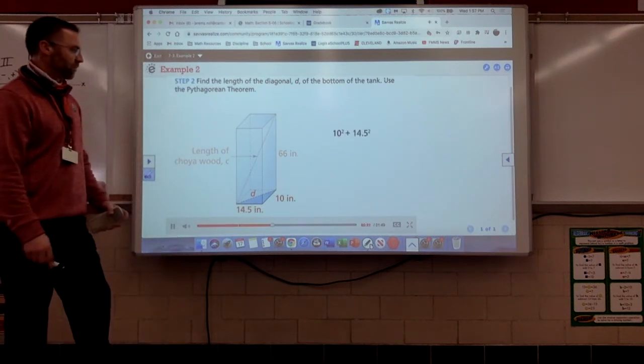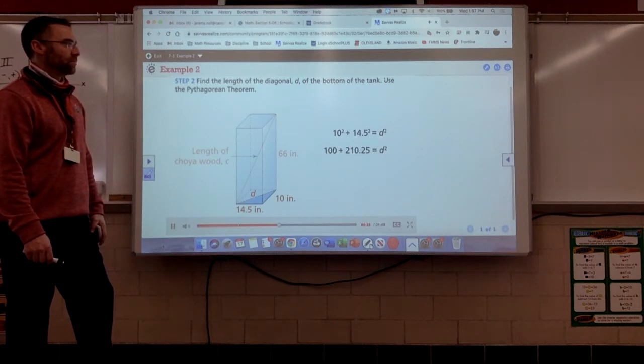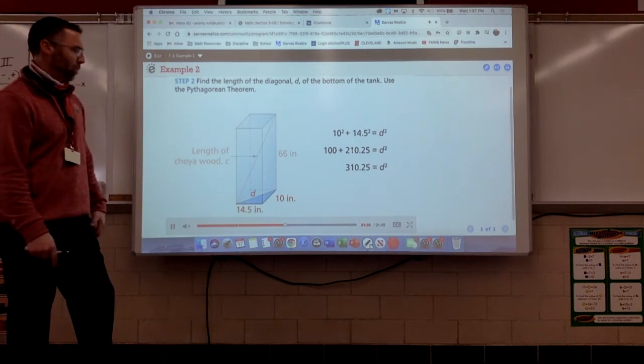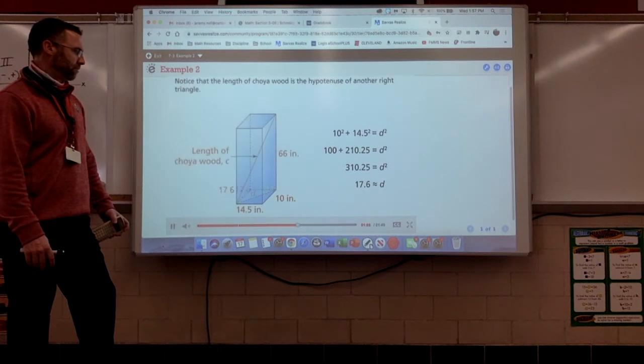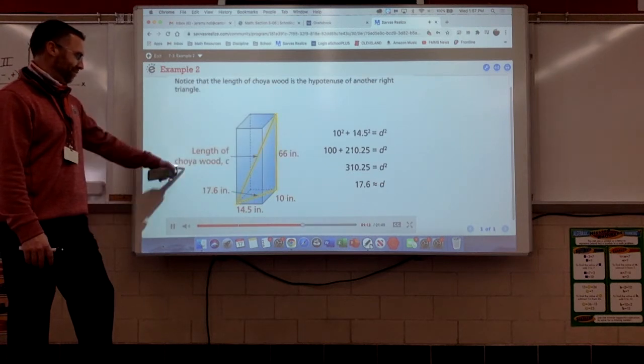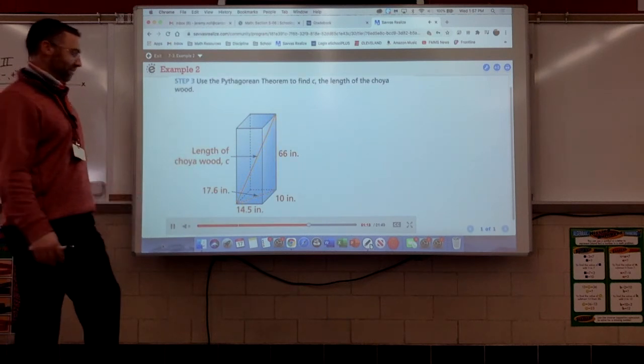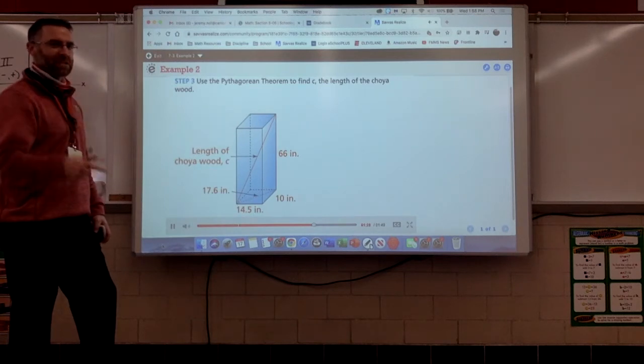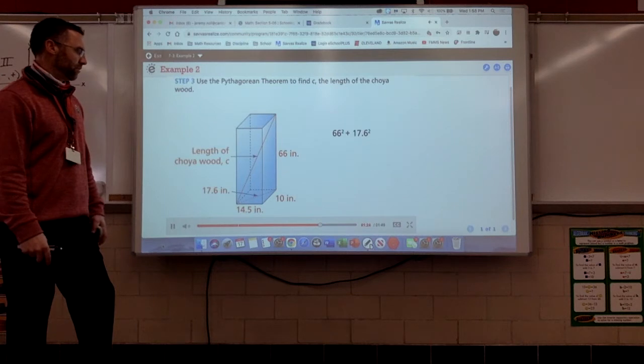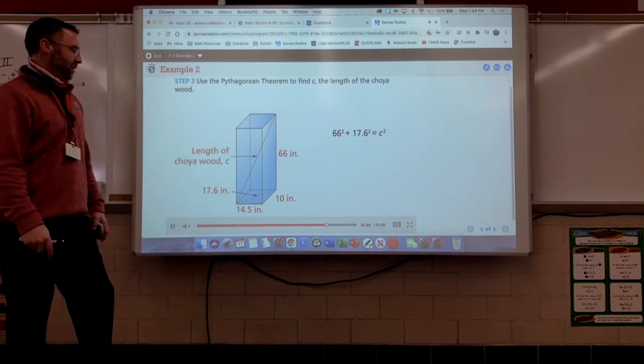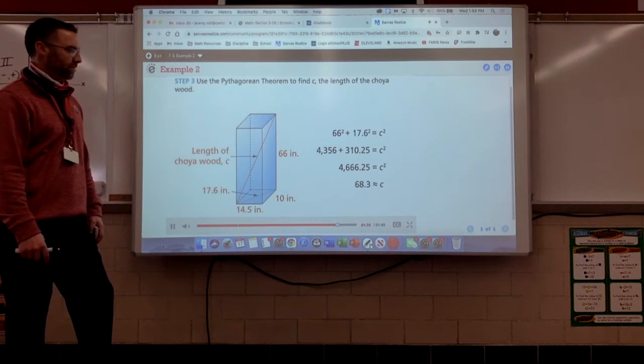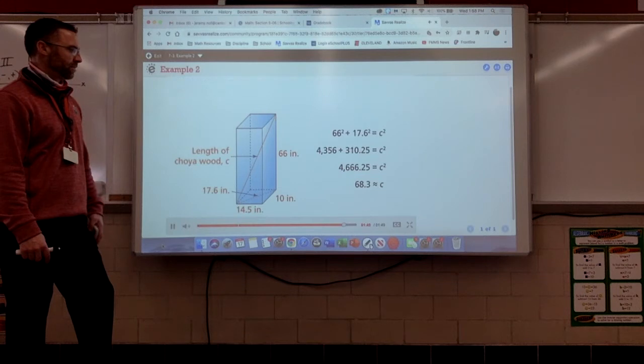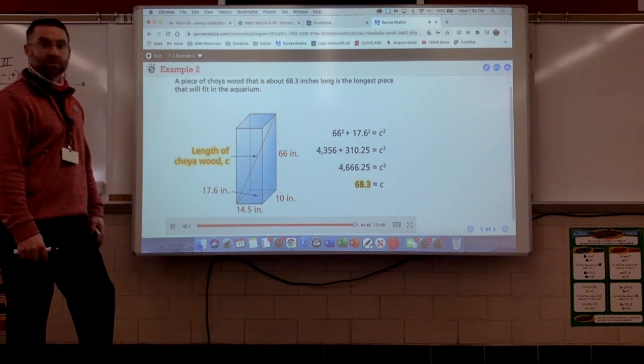The sum of the squares of the sides is equal to D squared. Simplify the expression to find that 310 and 25 hundredths is equal to D squared, which means that D is approximately 17 and 6 tenths. Notice that the length of cholla wood is the hypotenuse of another right triangle. What? Now, use the Pythagorean theorem again to find C, the length of the cholla wood. That's the second time. The sum of the squares of the two legs of the triangle is equal to the square of the hypotenuse, C. Calculate the squares, add them, and then take the square root of both sides to find that C is approximately equal to 68 and 3 tenths. A piece of cholla wood that is about 68 and 3 tenths inches long is the longest piece that will fit in the aquarium. Wow.